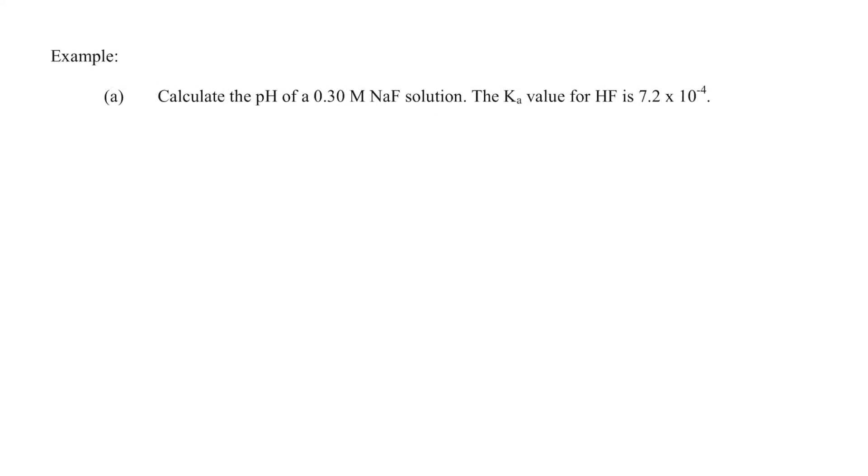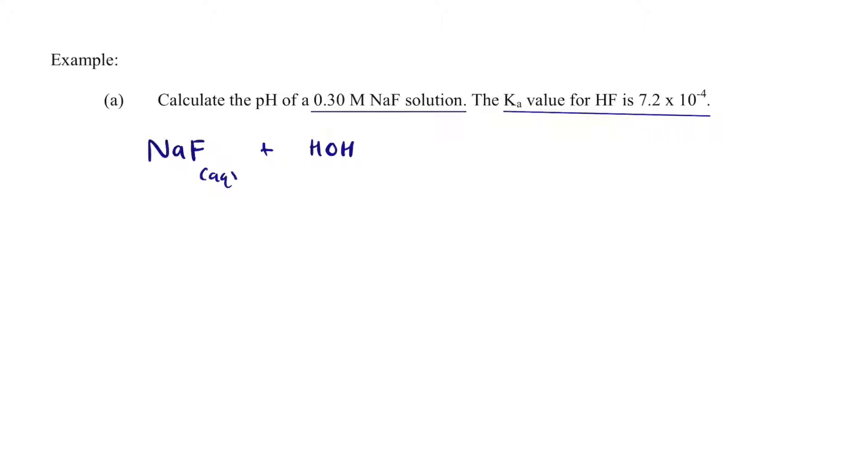So let's do some example problems with some math, and you'll see that the math is going to be nothing that is too new. What we have is we have a solution of NaF, and then we're given the Ka value of HF, so what we're going to do is we're going to take NaF plus water, NaF is aqueous, plus liquid water. That will produce NaOH plus HF in just a double replacement reaction,